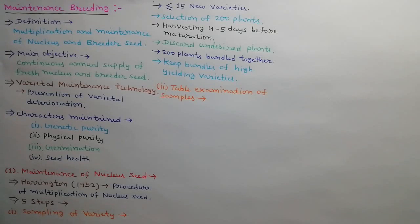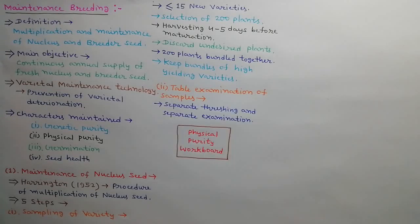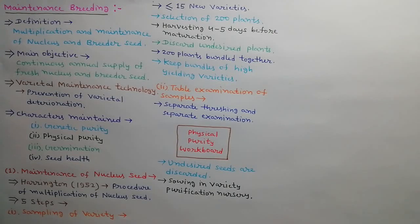Second step is table examination of samples. Selected bundles are threshed separately and seeds are examined in piles on physical purity workboard. Piles with undesired characters as diseased, off-types, etc. are discarded. Remaining pure seeds of individual plants are grown in variety purification nursery which is called nucleus seed.